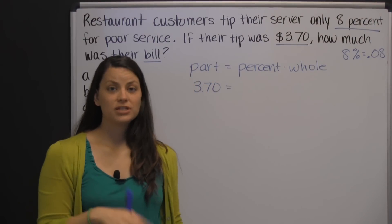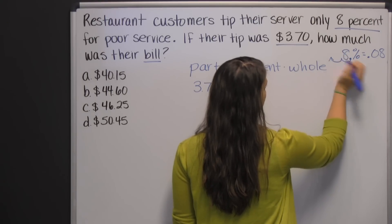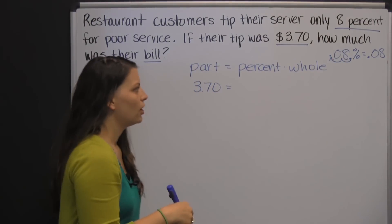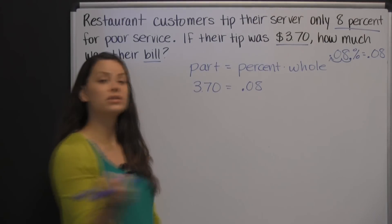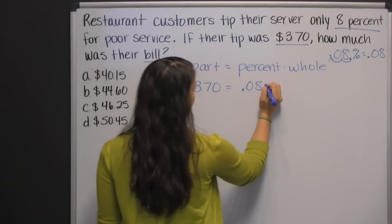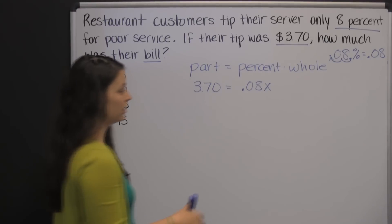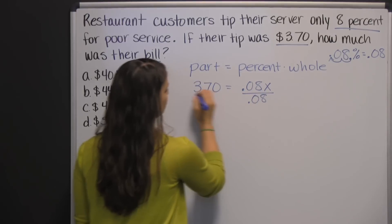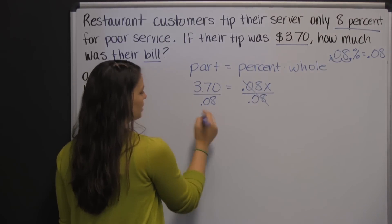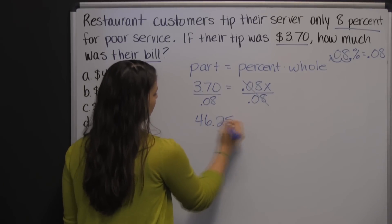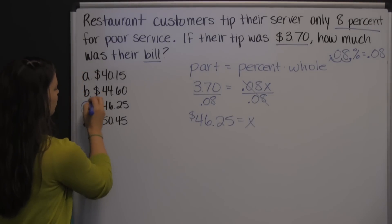The way you go from a percent to a decimal is just to take the decimal in 8% — which is at the back of the number — and move it two places to the left, filling that empty place with a zero. So for this percent, we'd put 0.08 times the whole, and the whole is what we're trying to find, so that's our variable x. To solve for x, you just need to undo multiplying by 0.08 by dividing both sides by 0.08. $3.70 divided by 0.08 is $46.25, which means the bill for their meal was $46.25.